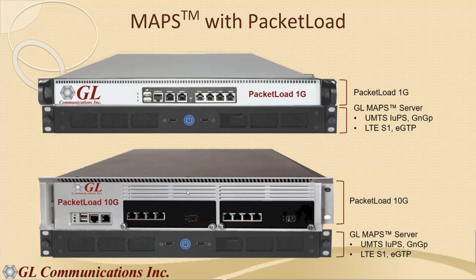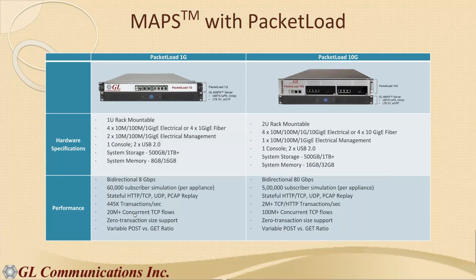GL has a product called MAPS with Packet Load. Packet Load is a device used to generate high-density mobile data. It is combined with MAPS so that MAPS controls the Packet Load, passing all tunneling information and generating high-density traffic. We have two variants: a 4-Gig device with four ports of 1 Gig, supporting GTP protocol variants like IUPS, GNGP, LTE S1, and eGTP; and a 10-Gig device with four ports of 10 Gig that can generate up to 80 Gbps of bidirectional traffic.